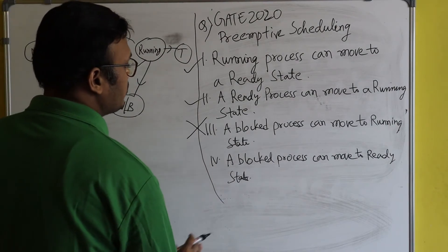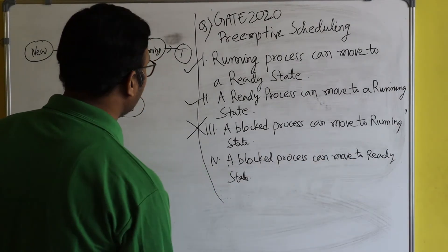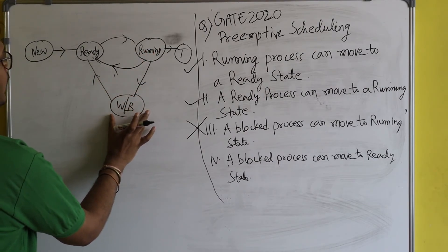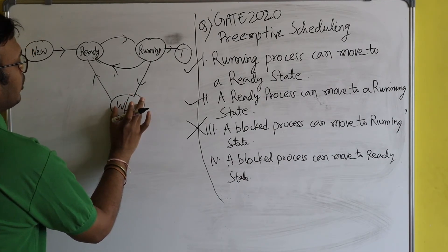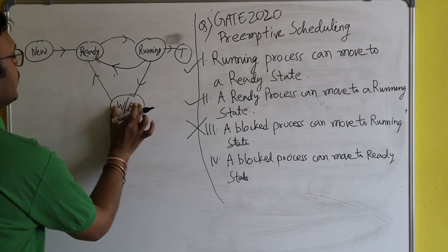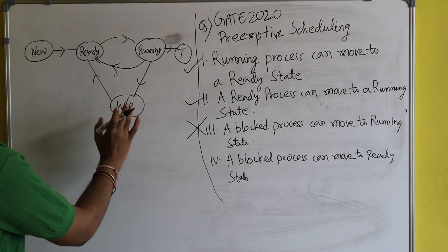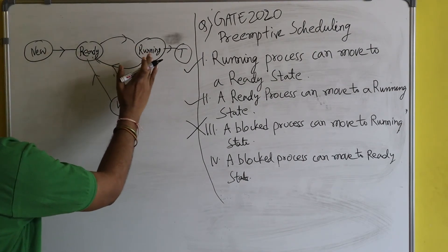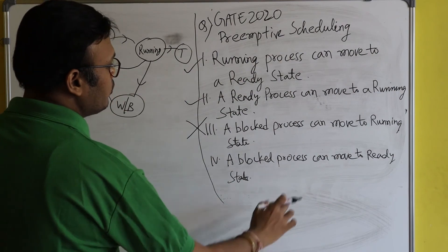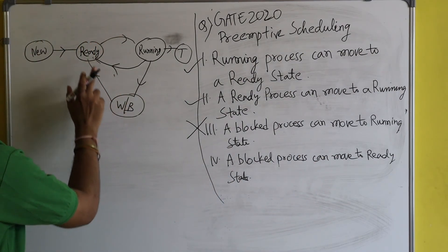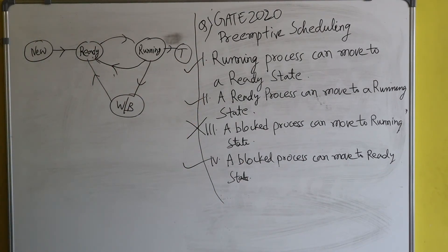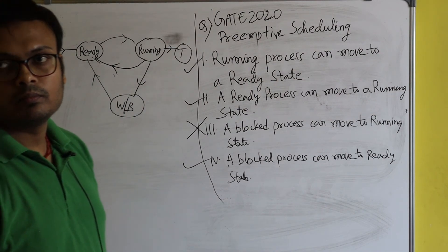Option four: a blocked process can move to a ready state — yes, that's correct. When the I/O of the process is completed, the process wants to run but it cannot go directly to the running state; it must first move to the ready state. So the transition from blocked to ready is valid. Therefore, options one, two, and four are correct.